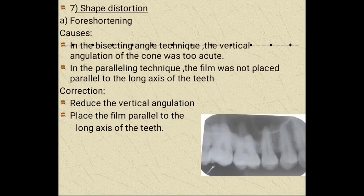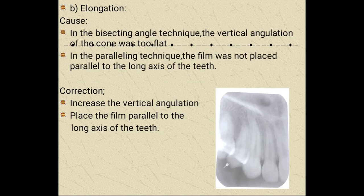Next is shape distortion. Foreshortening is caused when, in the bisecting angle technique, the vertical angulation of the cone is too acute, or in the paralleling technique, the film is not placed parallel to the long axis of the teeth. It can be corrected by reducing the vertical angulation and placing the film parallel to the long axis. Elongation occurs when in the bisecting angle technique the vertical angulation is too flat, or in the paralleling technique the film is not parallel to the long axis of the teeth. It can be corrected by increasing the vertical angulation and placing the film parallel to the long axis.